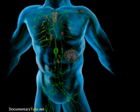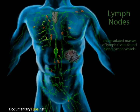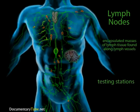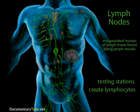Some lymph tissue is very diffuse with no clear boundaries. Others are more organized into groups called lymph nodes. Lymph nodes have three functions. First, they are testing stations that monitor the blood by receiving samples of blood plasma. Second, if the sample is rife with foreign invaders, they produce lymphocytes and send them into the bloodstream to destroy those invaders. In addition, the lymph nodes filter the lymph so they can only return clean fluid back to the blood.